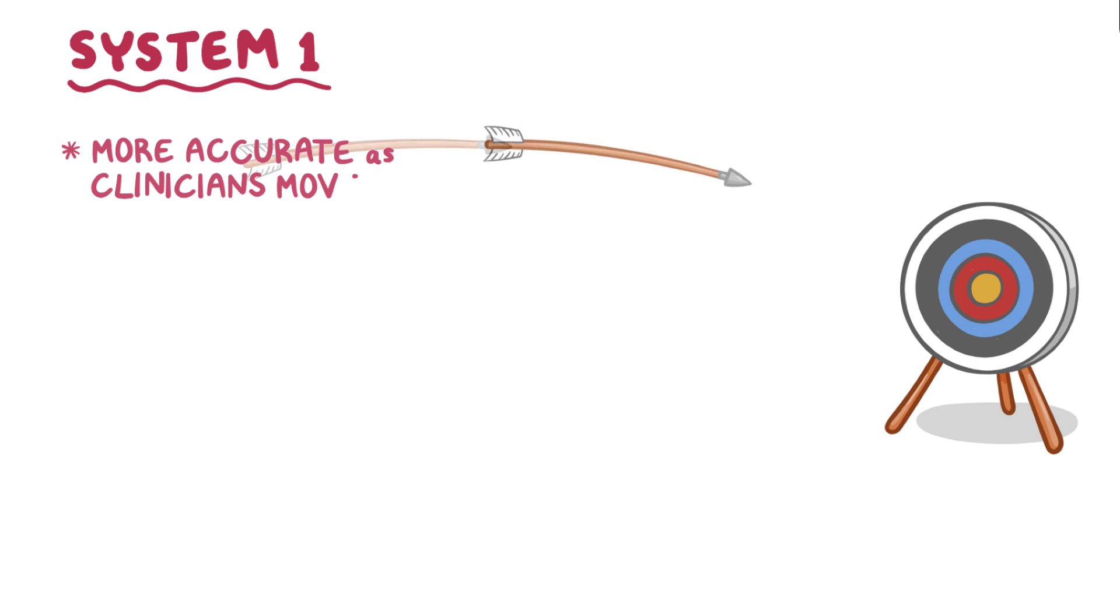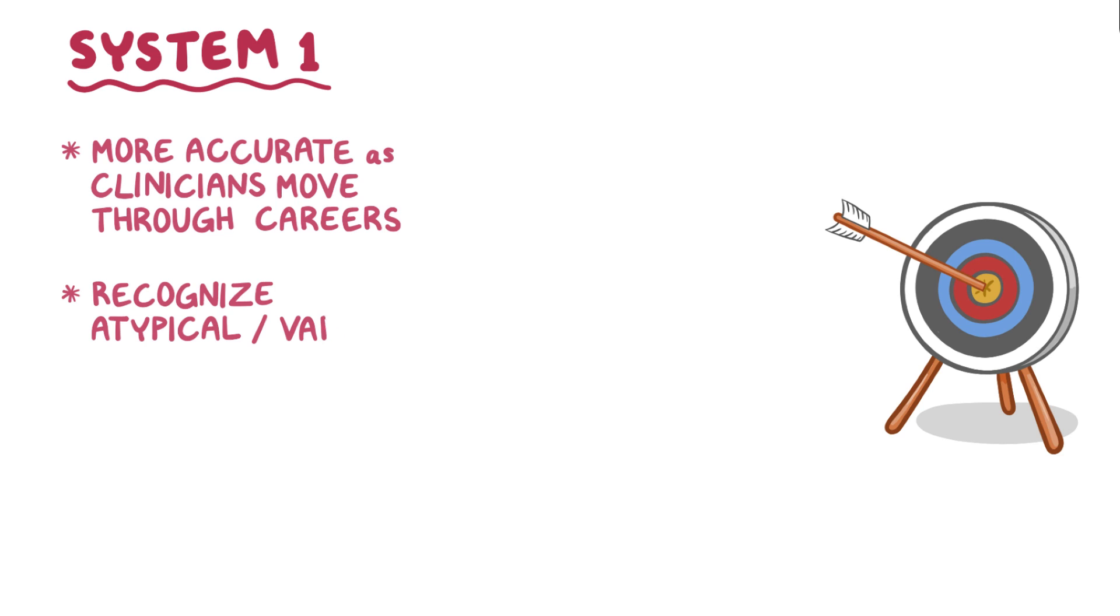Generally speaking, System 1 thinking becomes more accurate as clinicians move through their careers, and can recognize atypical or variant presentations.